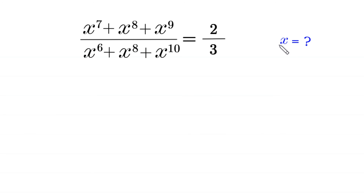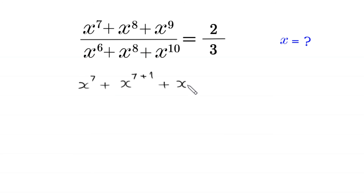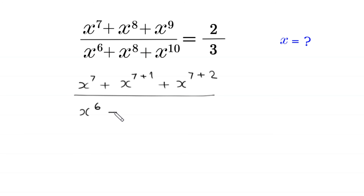Let's start. x to the power 8 can be written as x to the power 7 plus 1, and x to the power 9 can be written as x to the power 7 plus 2. In the denominator, x to the power 8 can be written as x to the power 6 plus 2, and x to the power 10 can be written as x to the power 6 plus 4.